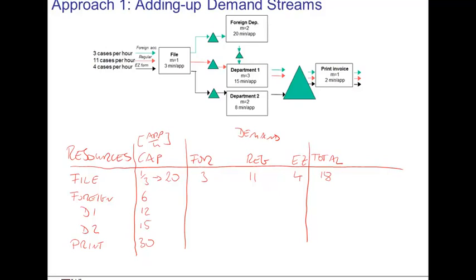At the foreign step, the situation is different because only the foreign units — three units per hour — arrive at this department; there is no demand from regular or easy units. In department one, we have three units from the foreign cases and eleven from the regular ones, but none from the easy cases. In department two, we have no foreign, no regular — just easy ones at four units per hour. Finally, everybody shows up at printing, and the total demand there is three plus eleven plus four equals eighteen.